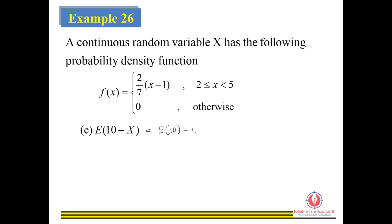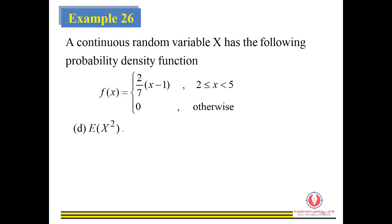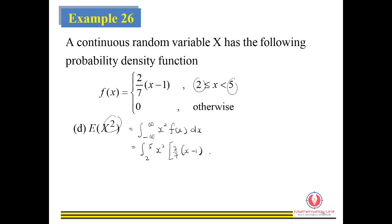For part C, we have E(10) — E(10) equals 10, so we use 57 over 7 and compute accordingly. For E(X²), make sure we multiply X² with the function first, then expand and substitute the limits 2 to 5.